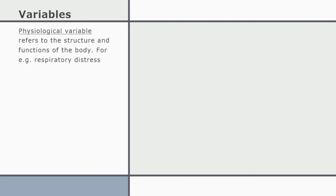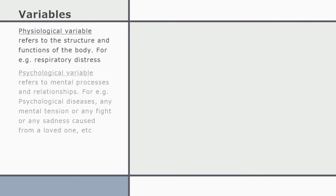Every basic structure has a set of variables for which stressors differ. The first is the physiological variable, which refers to the structure and functions of the body. For example, a patient suffering from respiratory distress is experiencing a physiological problem causing stress — that is a physiological variable.